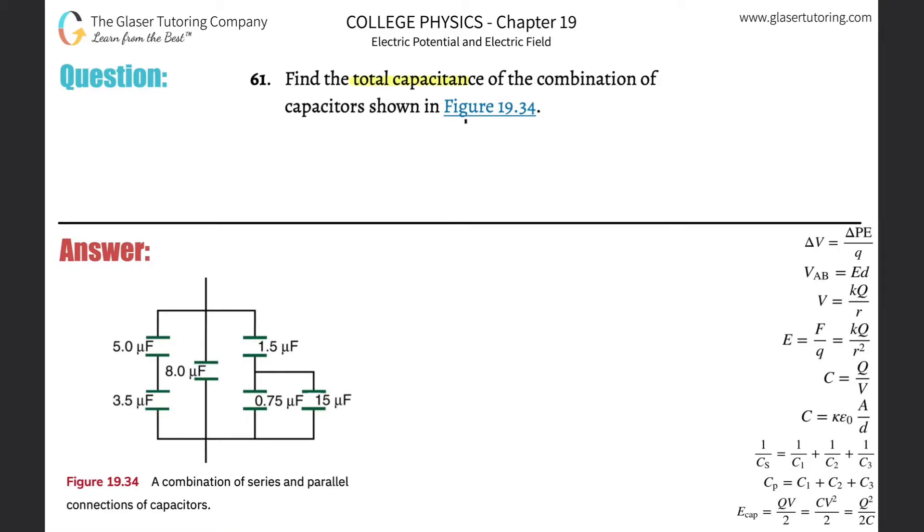Number 61: Find the total capacitance of the combination of capacitors shown in figure 19.34. So here's the figure—it looks very complicated. Why don't you take a look at number 60 and number 57 to help you understand this. They're simpler systems of capacitors and should hopefully help make this one make more sense.